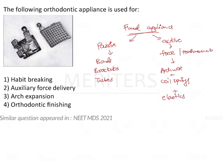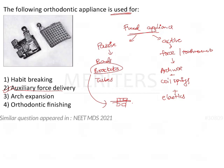Here we have been asked to identify the use of the appliance. From the options, we can clearly identify that this is an auxiliary force delivery unit, because auxiliary means something that supports or aids in a function. Brackets can be visualized as holders — they hold the arch wire in place so that the arch wire can exert force and bring about tooth movement.